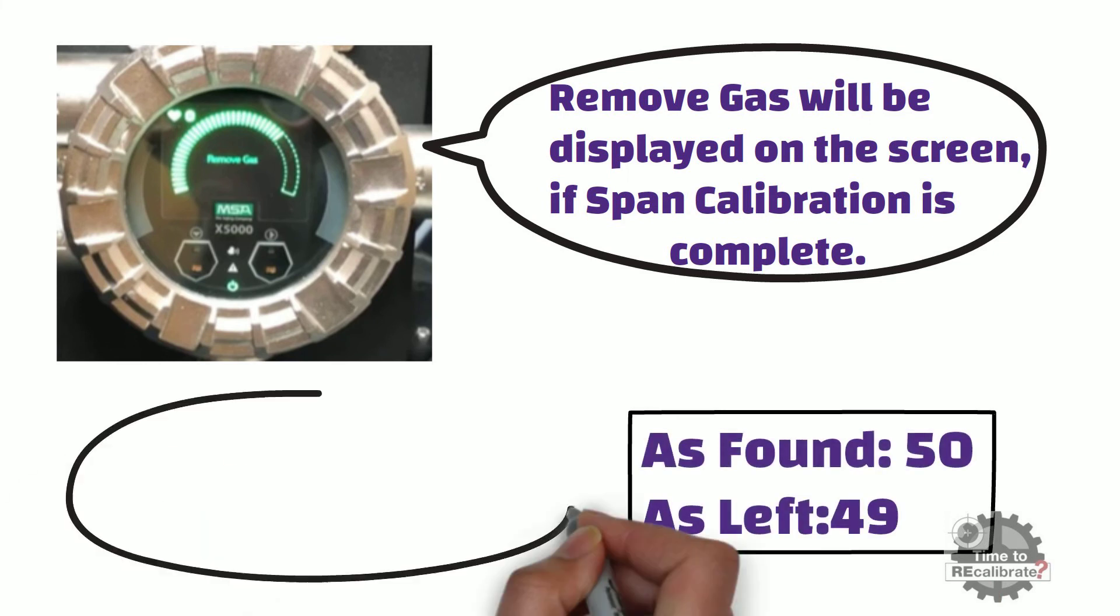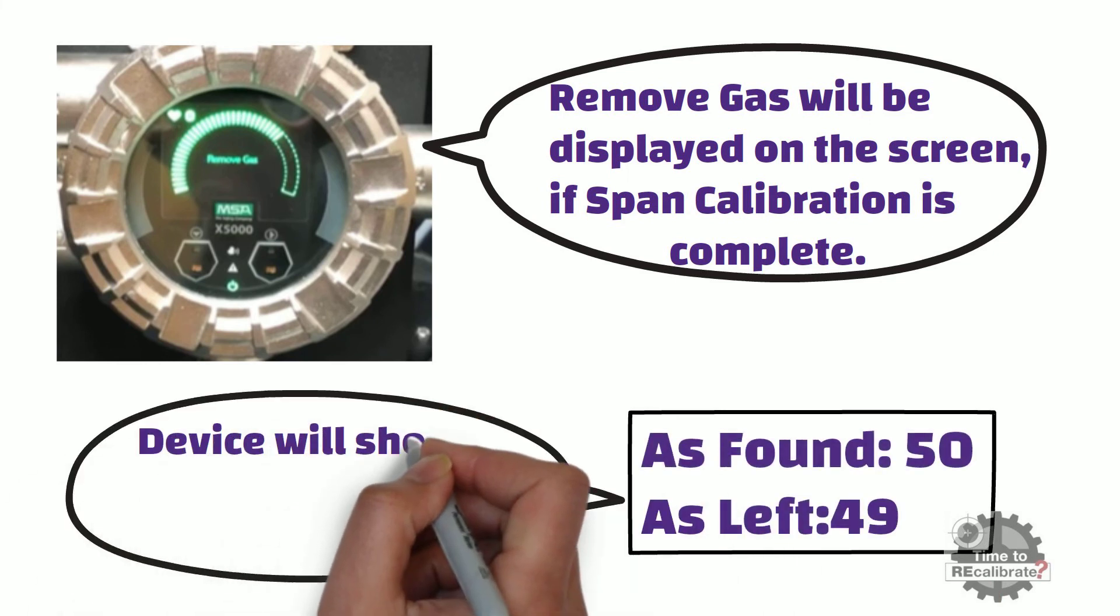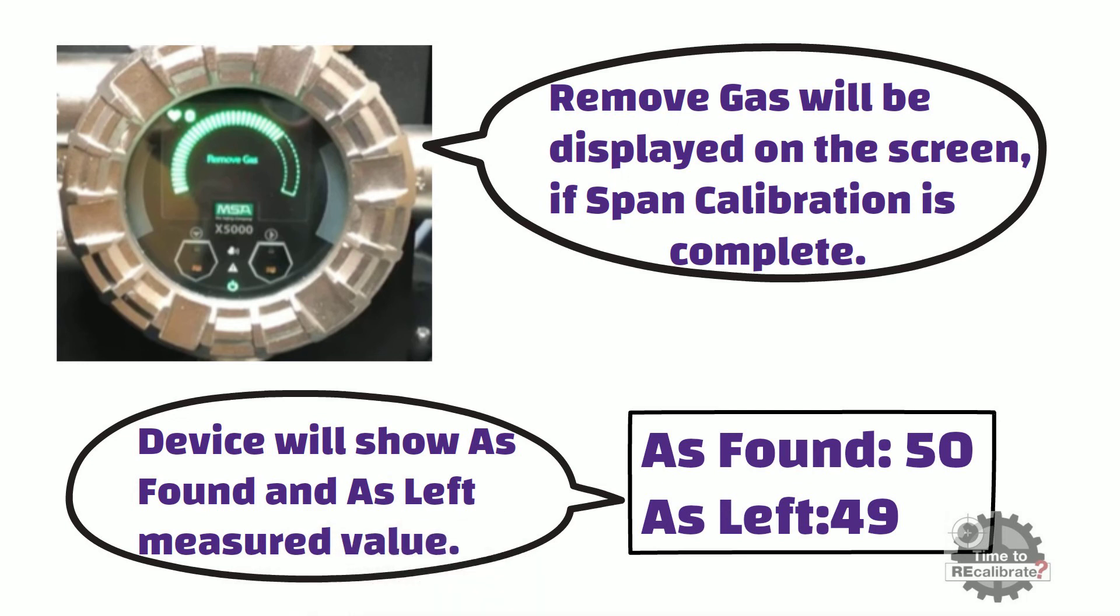After this, the device will show as found and as left measured values. Here, the as found value is 50% lower explosion limit.